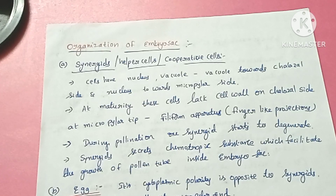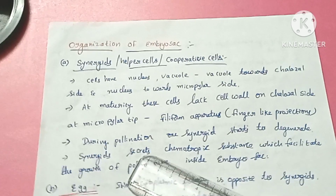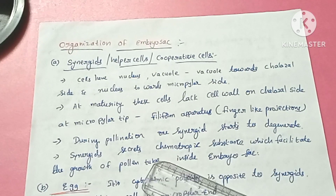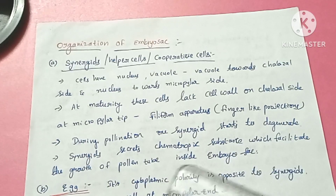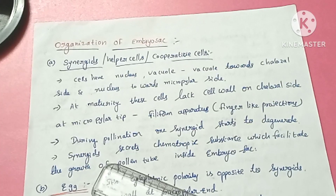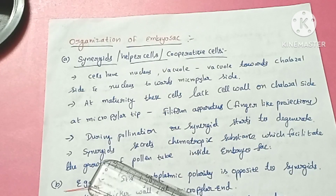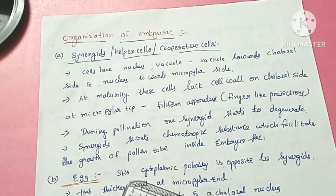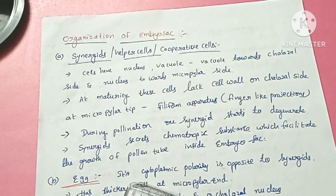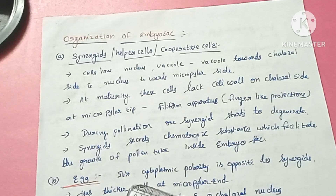The filiform apparatus plays a role during pollination. During pollination, one synergid starts to degenerate, and the pollen tube enters the embryo sac through the degenerated synergid. The synergids release chemotropic substances that facilitate the movement of the pollen tube inside the embryo sac.